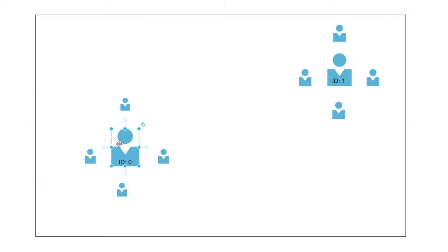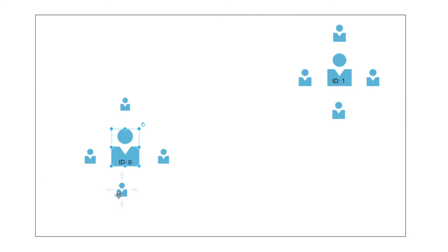In the next frame, this person can move to a nearby position — it cannot magically jump to a far position. When the person moves, we pass the new coordinates to the tracker, and the tracker calculates the difference between the new coordinates and the previous coordinates. If that difference lies within a threshold, the tracker keeps assigning the same object ID to that person. So as the person moves frame by frame, the ID remains the same.